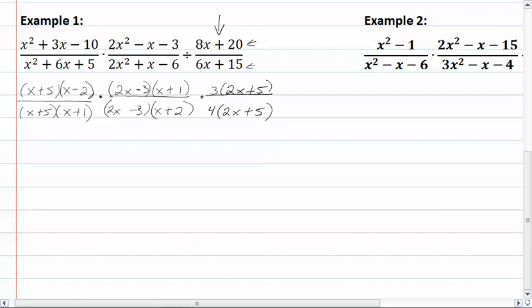Now we want to take out all the common factors between top and bottom. We have x plus 5, x plus 5, x plus 1, and x plus 1. 2x minus 3, the 2x minus 3, and 2x plus 5, and the 2x plus 5.